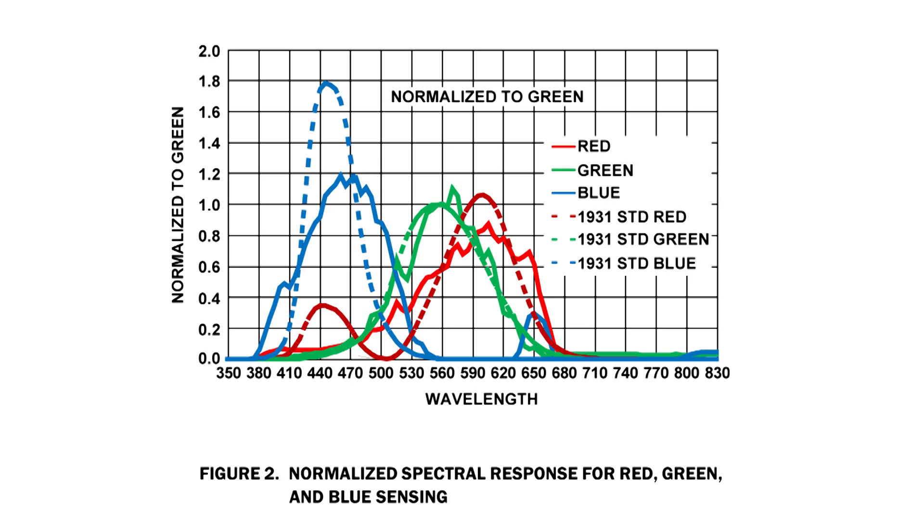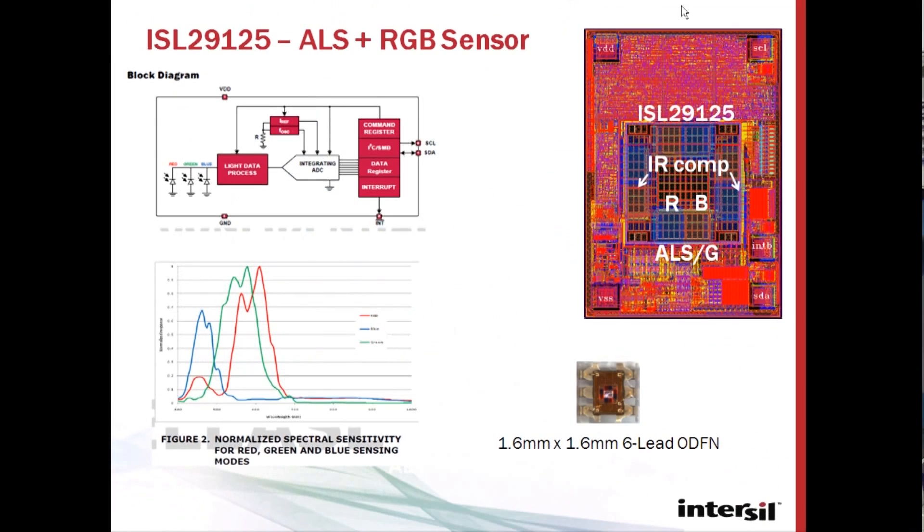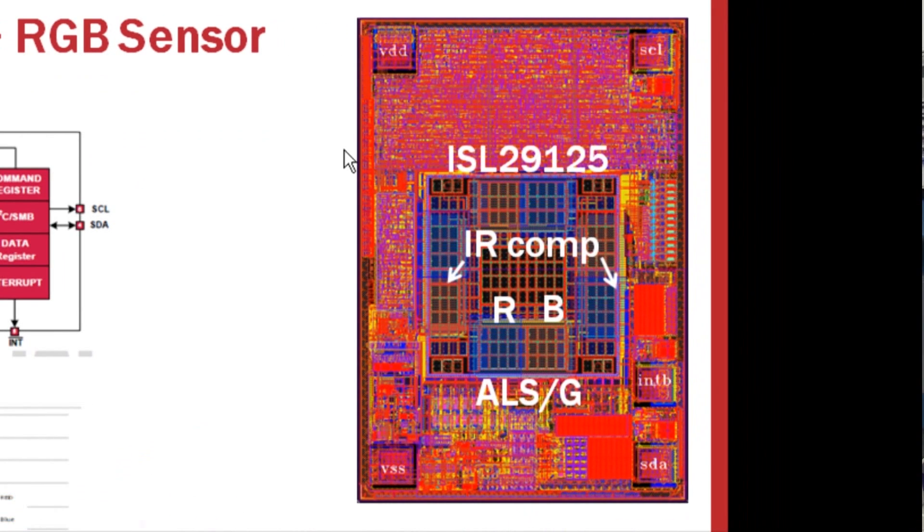Up in the right corner is a snapshot of the actual die, and where you can see some IR compensation. This is to allow you to put the part behind glass, which blocks out ambient light or filters any kind of light, but allows IR components to come through, so that allows you to do a better job of filtering IR light. And then you see the R, G, and B components of the diode array.